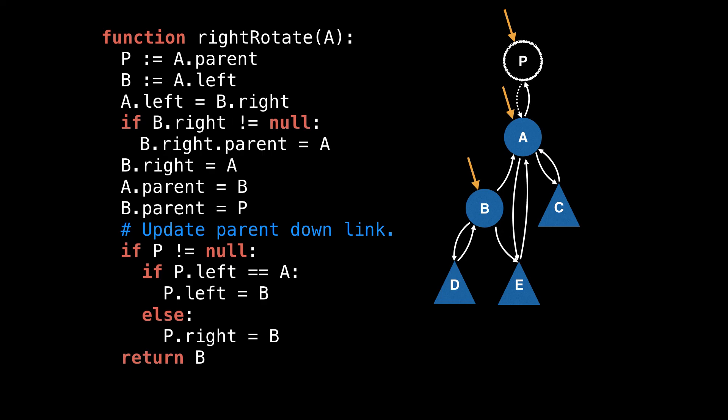Next, let's make A the right subtree of B. So set B's right pointer to reference A. Now make A's parent pointer reference B.